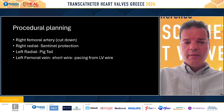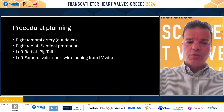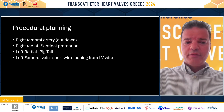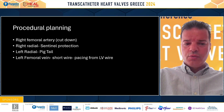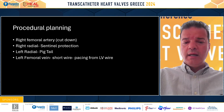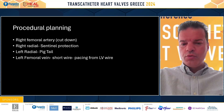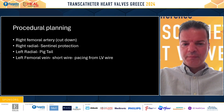There is a right radial axis using a Sentinel cerebral protection device, a left radial axis using the pigtail, and the left femoral vein with a short wire for pacing from an LV wire. We don't use any temporary wire for pacing.